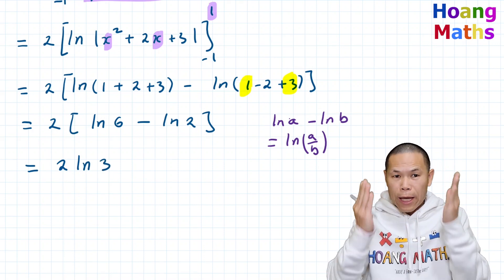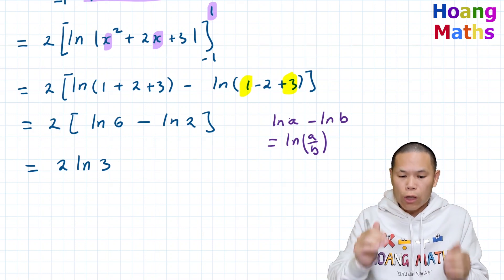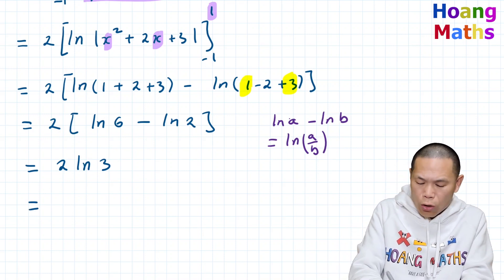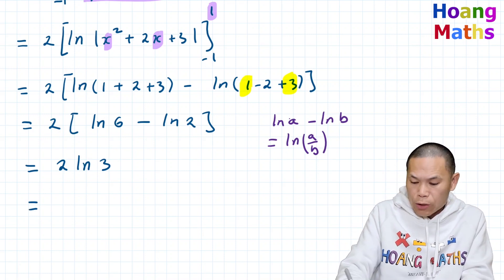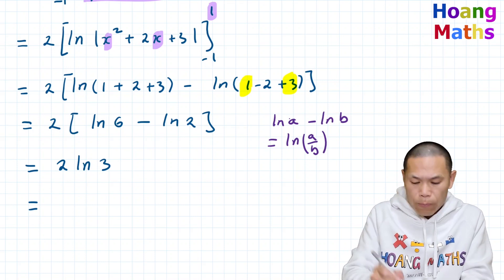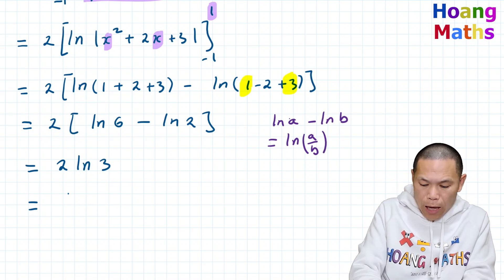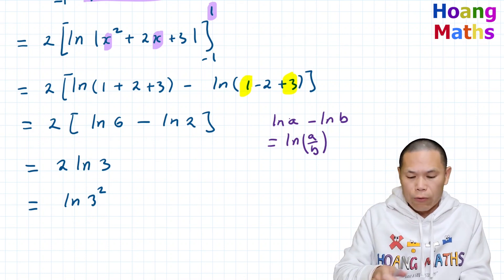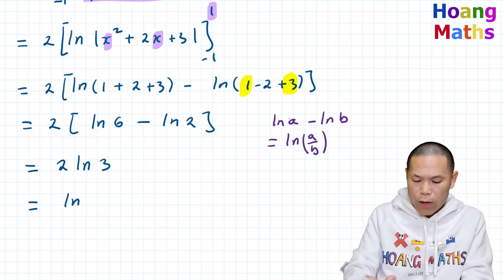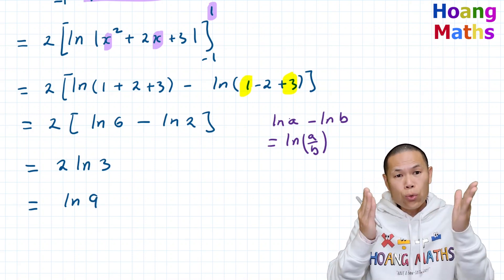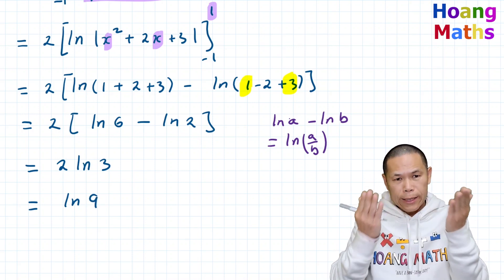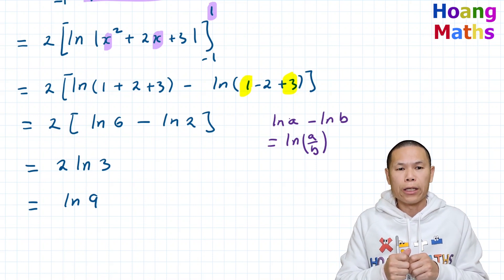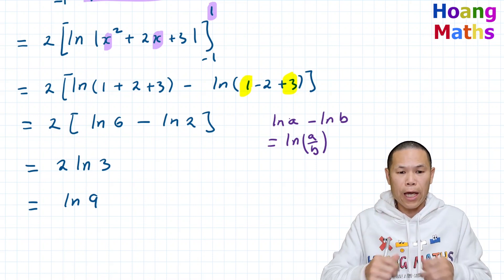Using log law again, 2 ln 3 is exactly the same as ln of 3 squared. And 3 squared is 9, so you can also write ln of 9. So 2 ln 3 equals ln 9. Whichever way you write it doesn't really matter.